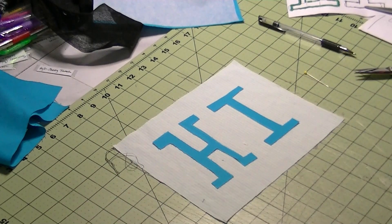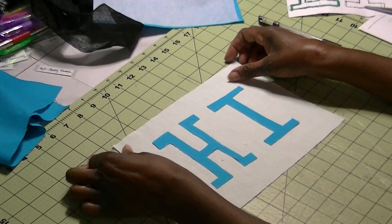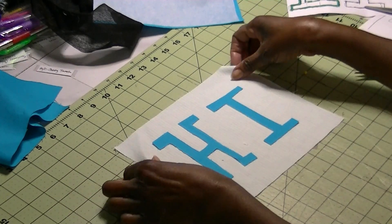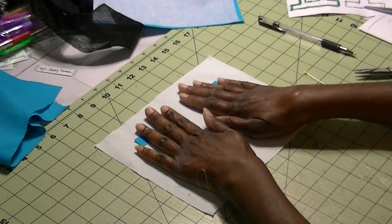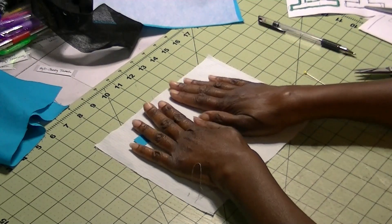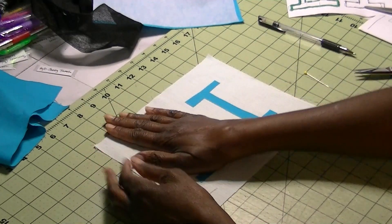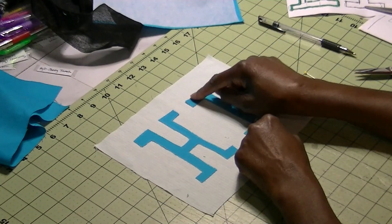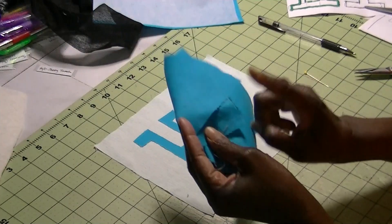Okay. And like I said, you're just going to be nice and perfect because mine is not. I freehand my letters and they don't even look anything like they should look. But what you're going to do now is you're going to go to the iron and you're going to iron them down the exact same way you iron the Pelon Wonder Under onto the fabric itself.